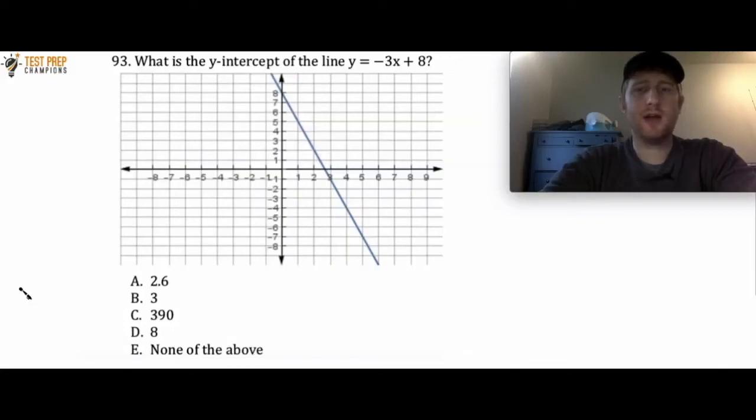What is the y-intercept of the line y equals negative 3x plus 8? Is it a, b, c, d, or is it e?